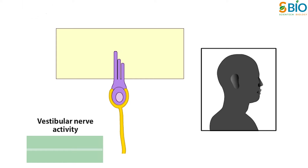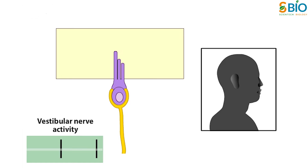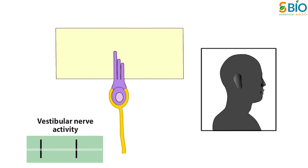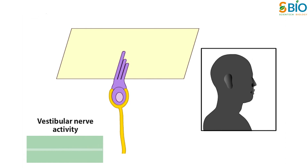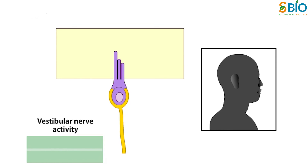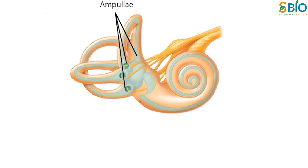The shearing motions between the macula and the otolithic membrane also occur when the head undergoes linear acceleration. Hair bundle displacement occurs transiently in response to linear acceleration and to tilt, whereas the otolith organs are primarily concerned with the head's translational movement and orientation with respect to gravity. The semicircular canals sense head rotations arising either from self-induced movement or from the angular accelerations of the head imparted by external forces.